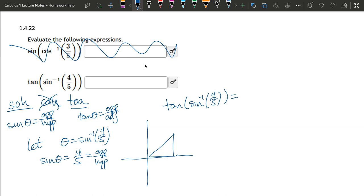So opposite is 4. Hypotenuse is 5. I need to find the adjacent. I'll call it A. You have A squared plus 4 squared equals 5 squared.